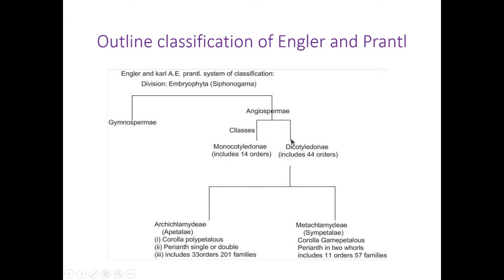Now let us see the outline classification of Engler and Prantl. Engler and Prantl give the division embryophyta siphonogama, which is also called by other scientists spermatophyta or phanerogams — that means the flowering plants. That is why they give the name embryophyta.